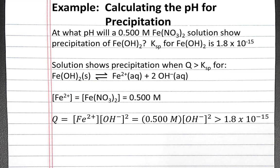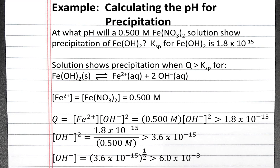We can rearrange this expression to solve for the hydroxide ion concentration. When we do so, we see that the hydroxide ion concentration has to be greater than 6 times 10 to the negative 8th molar.